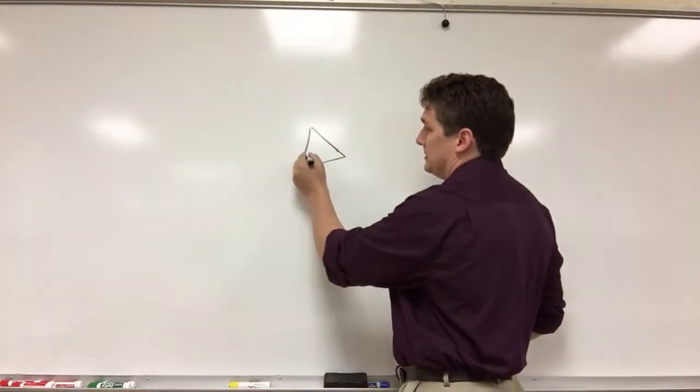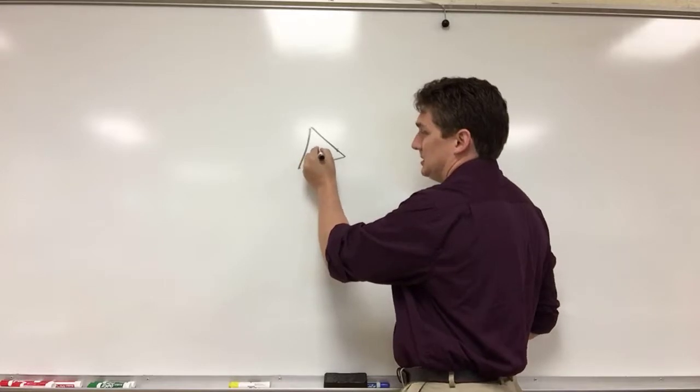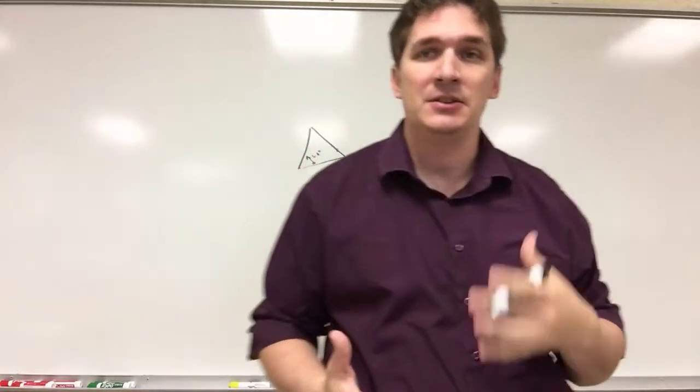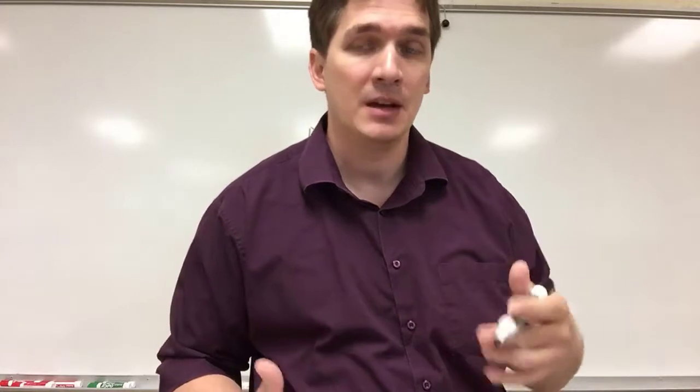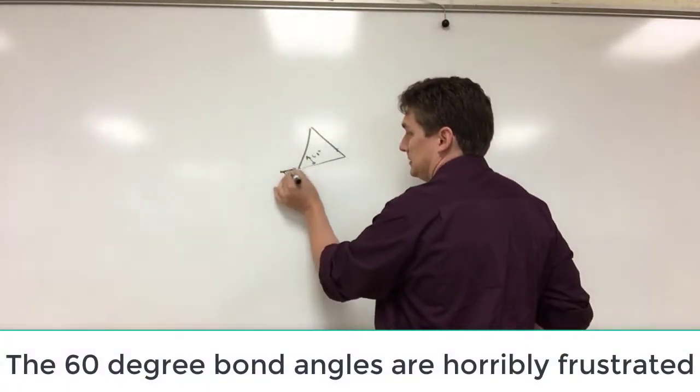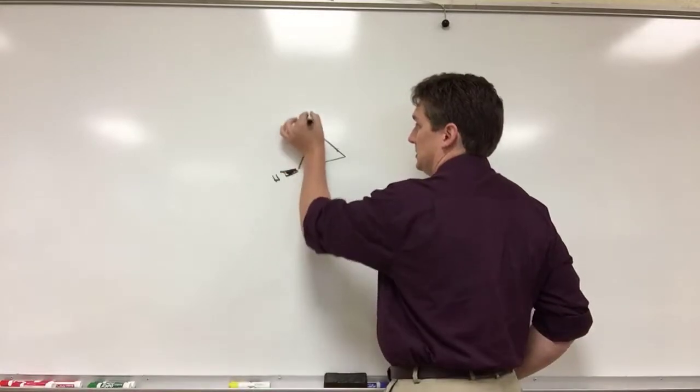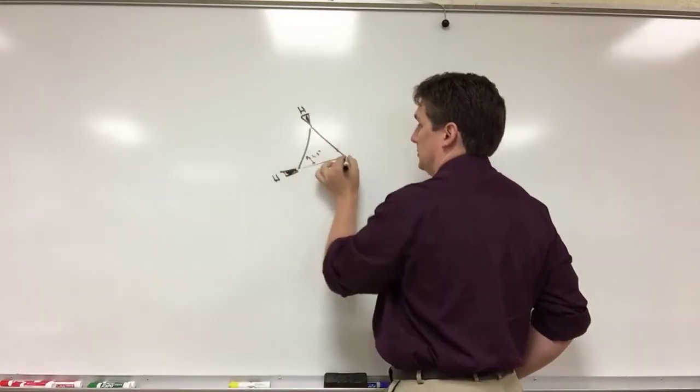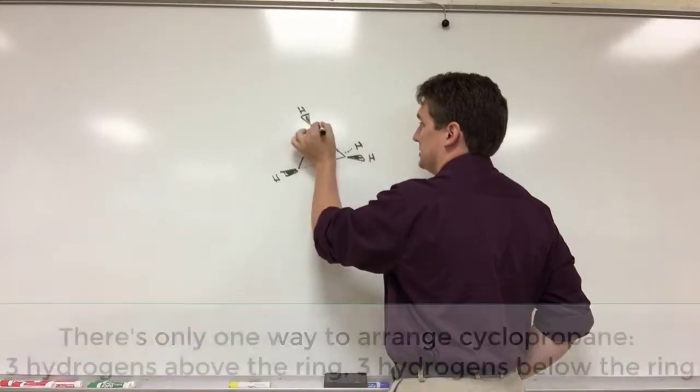We're forcing the bond angles here to be 60 degrees and this is substantially less than the 109 degrees that we'd expect for a tetrahedral sp3 carbon. There is only one way to build this ring. The row of hydrogens above and the row of hydrogens below.